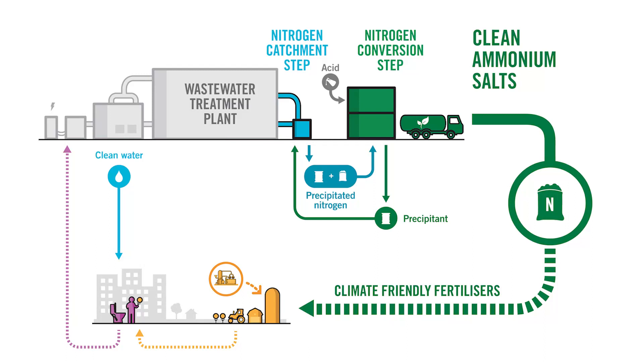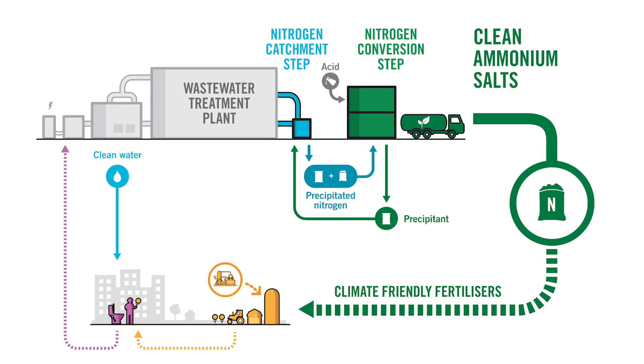At the same time the precipitant, magnesium phosphate, is regenerated. It is separated from the ammonium sulfate and sent back to the first step in the process again, making it resource efficient. The liquid fertilizer is then concentrated and stored until delivered to farmers.